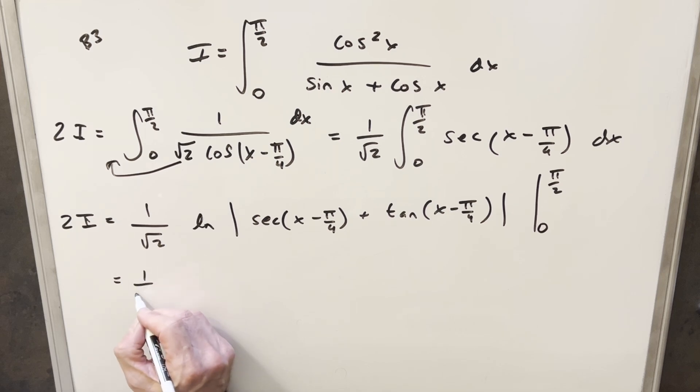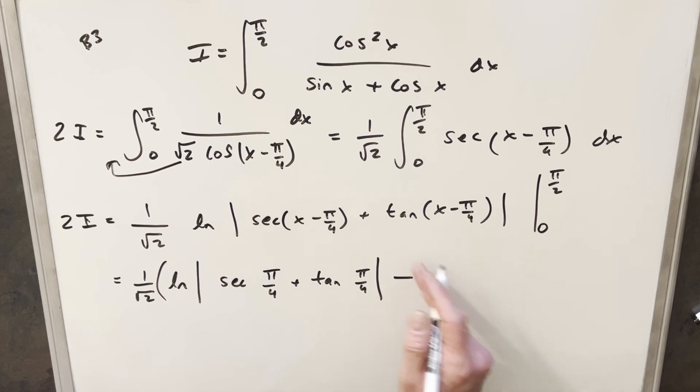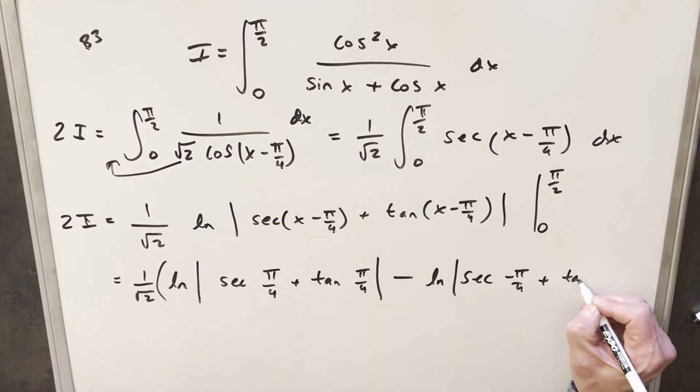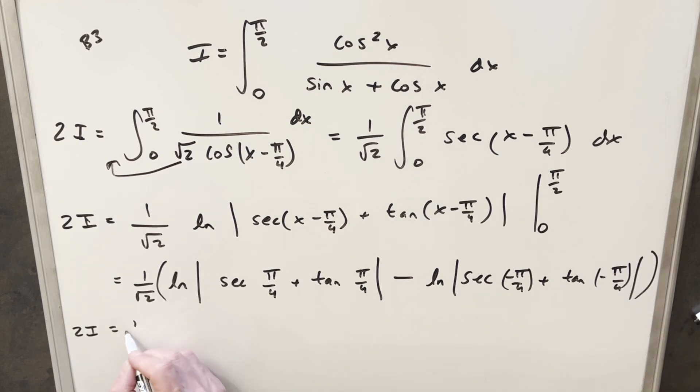Now, let's just evaluate everything. So we'll keep our 1 over square root of 2 in front here. Natural log, now secant of π/2 minus π/4, that's just going to be secant of π/4 here. And then same thing, this is going to become tangent of π/4. Okay, and then minus, then we have to evaluate at 0, so this is going to give me natural log, absolute value, secant. Now we're going to have minus π/4 here. Let's just leave that for a second. And then we're going to have tangent minus π/4. Now let's just go ahead and simplify everything.